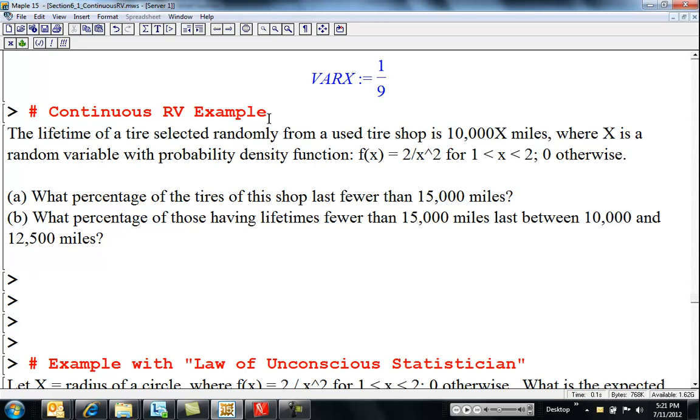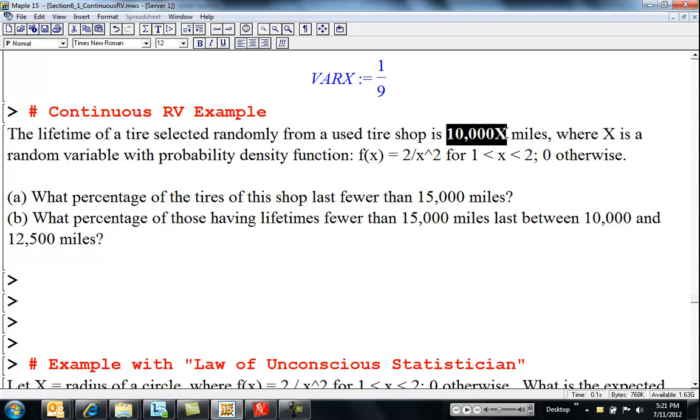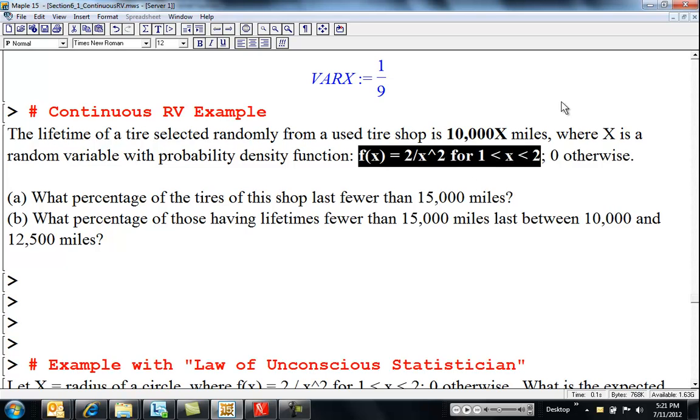The lifetime of a tire at a used tire shop is 10,000 x miles, where x is a random variable, and here's its density function, otherwise zero. So, we know it's going to last somewhere between. It's only giving us 10,000 to 20,000 miles of a used tire. So, that's just what they've modeled it to be.